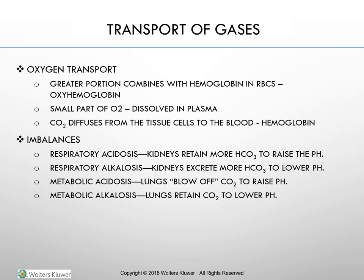CO2 diffuses from tissue cells to the blood. Bicarbonate ions (HCO3) are transported to the lungs for excretion. Most CO2 enters red blood cells, although some combines with hemoglobin to form carbaminohemoglobin. Much of the CO2 combines with water in the cells and exits as bicarbonate, which the plasma transports to the kidneys. A small portion remains in plasma as carbonic acid, which yields hydrogen ions. The amount of hydrogen ions determines the pH.